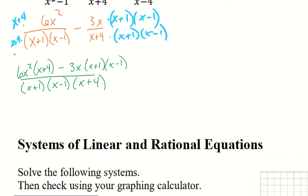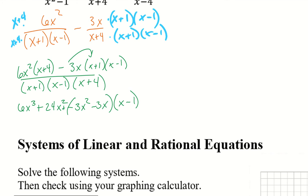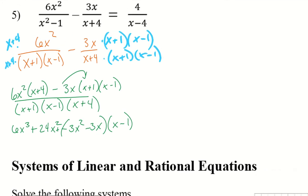So I now have in my numerator 6x squared times x plus 4 minus 3x times x plus 1 times x minus 1. As I'm getting to this step, I'm comparing to my notes and it looks like there was a number that was not printed. That should be a 6 there — this completely changes the answer, and I apologize for that.